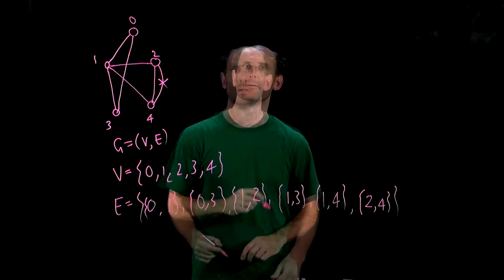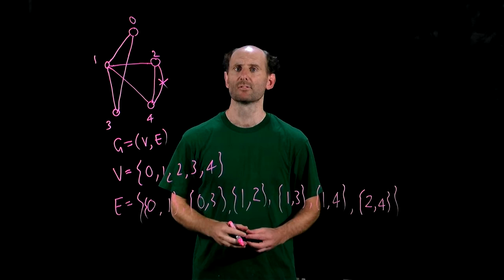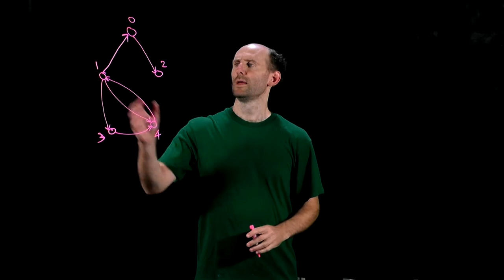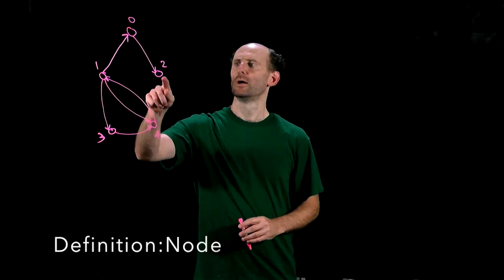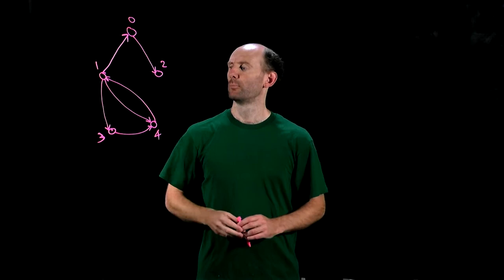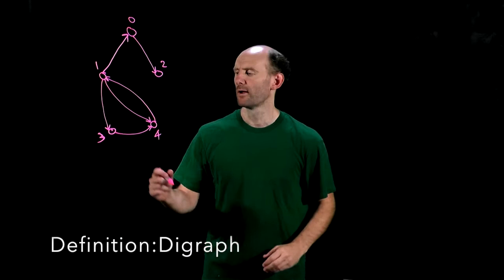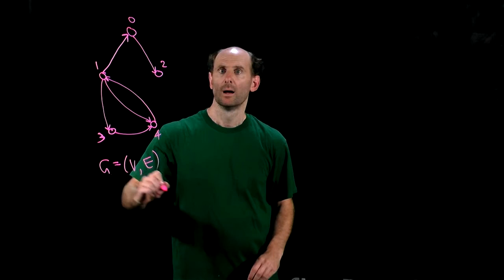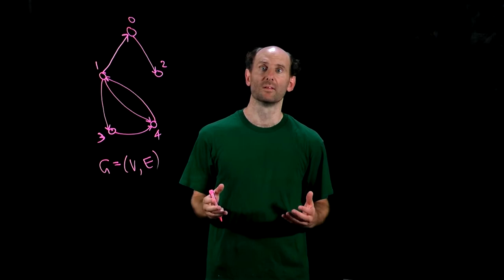The edges in a graph have no direction. If we introduce direction we have what we call a directed graph or a digraph. Here's an example of a digraph. The dots in a digraph are now known as nodes and the arrows joining them, like this arrow from 1 to 3, is known as an arc. Formally a digraph is still a pair G = (V, E) where V is now the set of nodes and E is a set of ordered pairs of nodes representing the arcs.